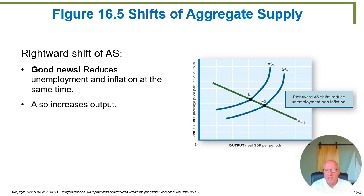We get two good things out of shifting the aggregate supply curve to the right: we increase output, which reduces unemployment and increases people's incomes, and we simultaneously have a reduction in the inflation rate.